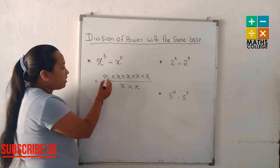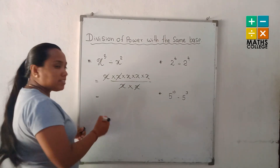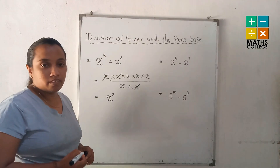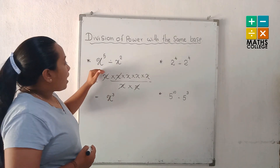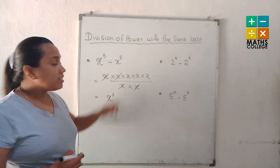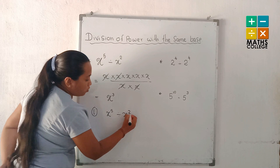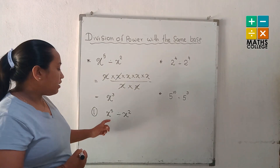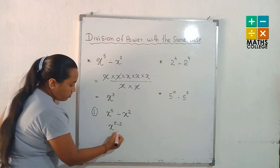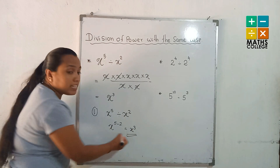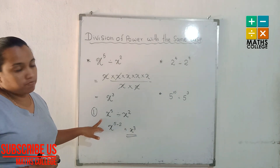Then, x is cancelled — 1, 2 — the 2 x's are cancelled. The remaining ones: 3 x's here. The answer is x to the power 3. This can be simplified by subtracting the indices like this. x to the power 5 divided by x to the power 2, subtracting the indices when the given powers have the same basis — the answer is x to the power 3. It's the easy method for solving the division of powers with the same basis.